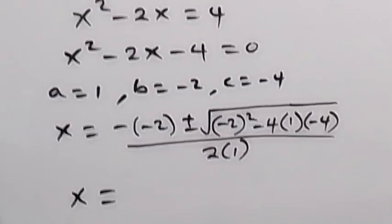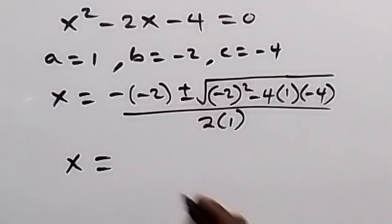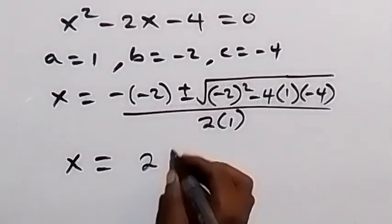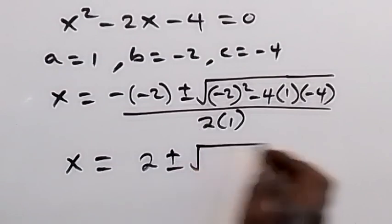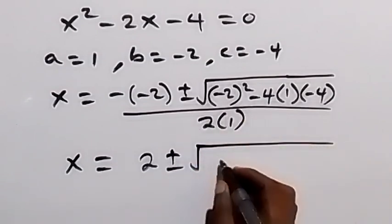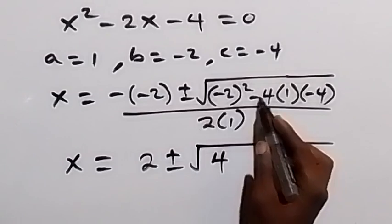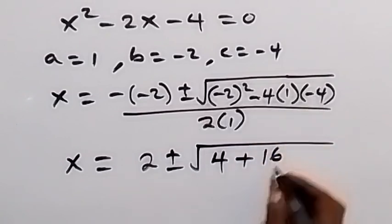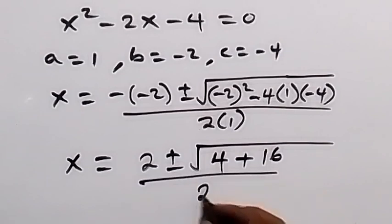And from here, x equals to, we have minus minus 2, that's plus. So we have 2 here, plus or minus square root of minus 2 squared, that's 4, then minus times minus, that's plus 4 times 4, we have 16, divided by 2.